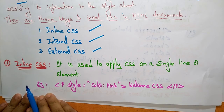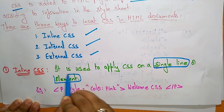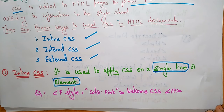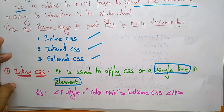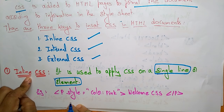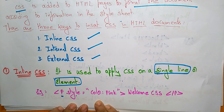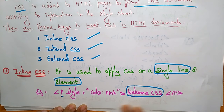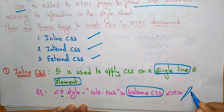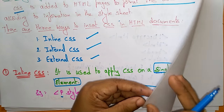The first one is inline cascading style sheet. It is used to apply a cascading style sheet on a single line or a single element. Whatever element or line you want to represent stylishly, if you apply the style on that particular line, you call it inline. The syntax: take a paragraph tag, style attribute with color set to pink — the text 'Welcome CSS' will be printed in pink color. This is called an inline cascading style sheet.